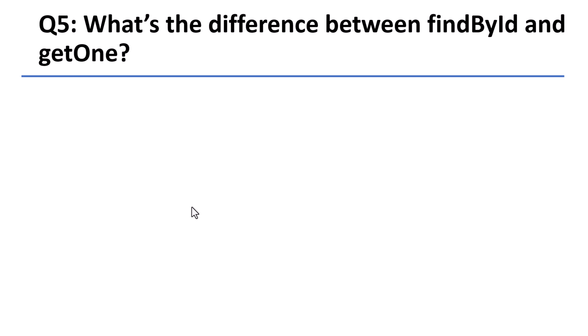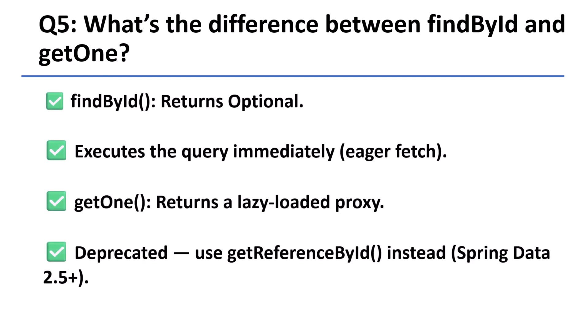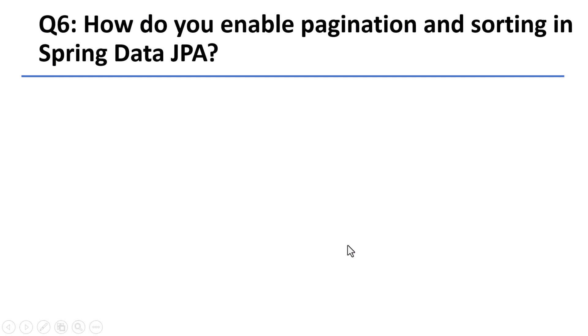This is helpful when you need full control over the query logic. Question 5: What's the difference between findById and getOne? The method findById returns an Optional and immediately fetches the data from the database. On the other hand, getOne used to return a lazy-loaded proxy object, but it is now deprecated in newer versions of Spring Data JPA. getReferenceById is recommended as the alternative.